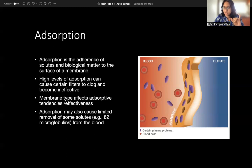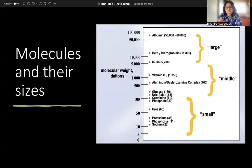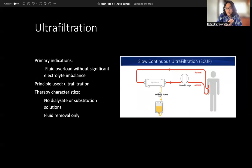To summarize: ultrafiltration removes only water; if you want to add solute removal, you use convection; if you want to remove solutes by concentration-dependent movement without much fluid removal, you use diffusion; and adsorption is adsorption. Regarding molecule sizes: small molecules — the ones you are most concerned with — include urea, creatinine, and electrolytes like potassium, sodium, and phosphorus.